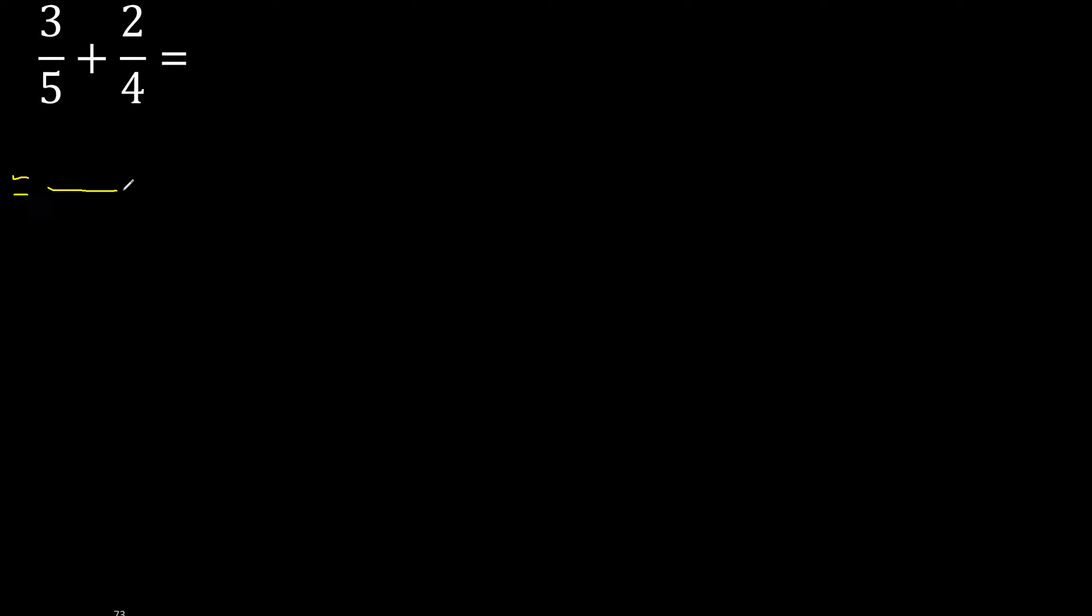First, multiply like this. 4 multiplied by 3 is 12, 5 multiplied by 2 is 10, 5 multiplied by 4 is 20.